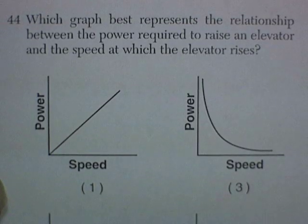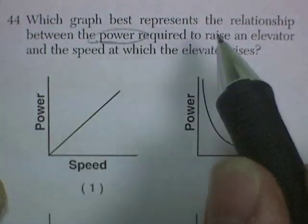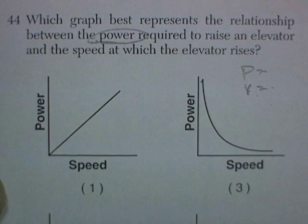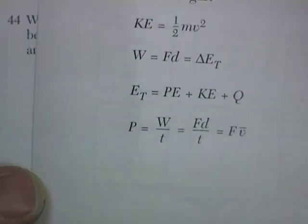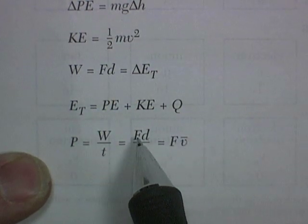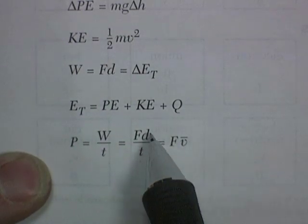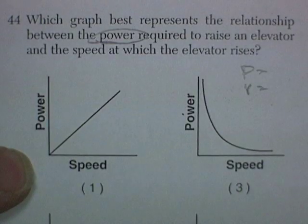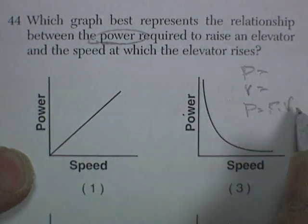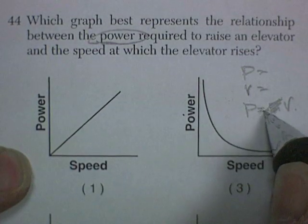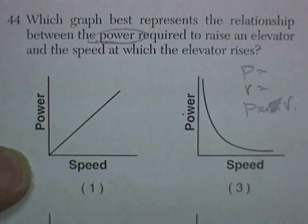Question 44. Which graph best represents the relationship between the power required to raise an elevator and the speed at which the elevator rises? So the relationship between power and speed. Well, we've got to find us a formula to help us with this one. As it turns out, it's down at the bottom. Power is equal to work divided by time. Work is force times distance. So power is equal to force times distance divided by time. And distance divided by time is velocity or speed. So we'll use that variation of the equation. And we'll say that power is equal to force times velocity. Now the force ends up being the weight of the elevator. And so it looks like a direct relationship. As the speed increases, the power required increases.